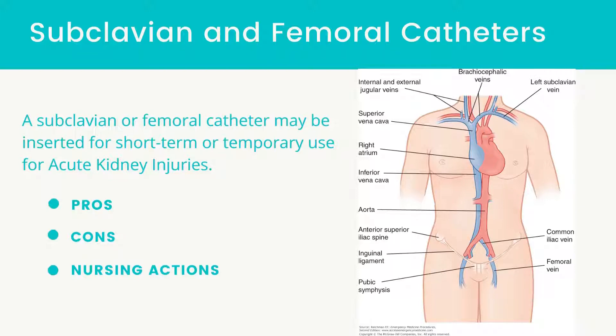Interventions include assessing the insertion site for hematoma, bleeding, catheter dislodgement, and infection. Remember that these catheters should only be used for dialysis treatments and accessed by dialysis personnel only. For infection control purposes, it is important to maintain an occlusive dressing over the catheter insertion site.